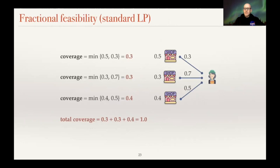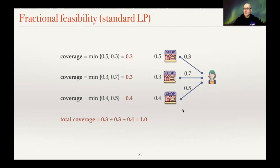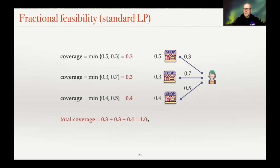What does it mean in the fractional solution that a client is serviced? A client can be partially served by every facility it is fractionally connected to. For a given facility, you take the minimum of the facility's fraction and the fraction corresponding to the connection from the client to that facility. For example, the first facility covers the client to extent 0.3, the second gives 0.3 service, and the third gives 0.4 service. Altogether, summing these three fractions gives a total coverage of at least 1, meaning the client is fully serviced in the fractional world.